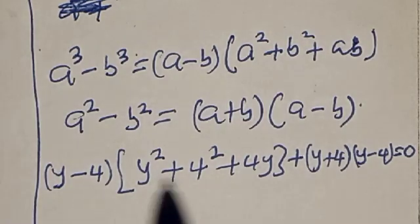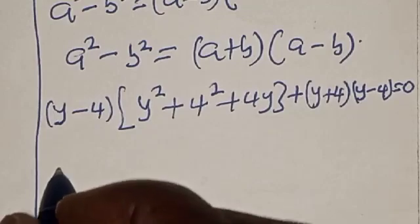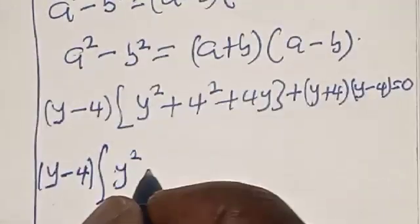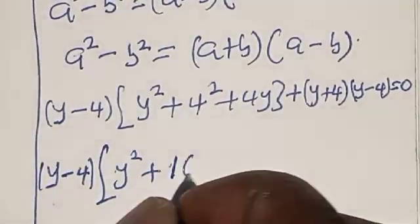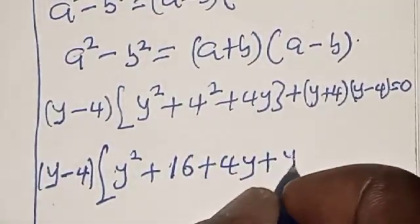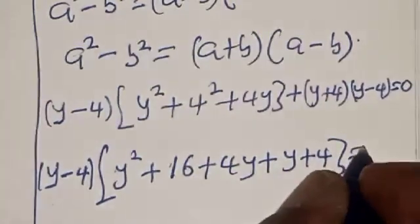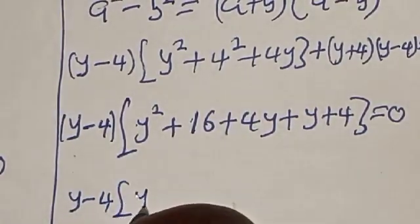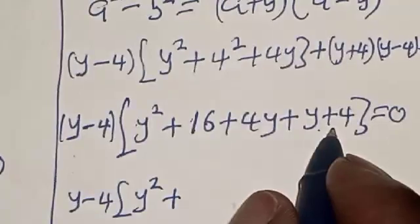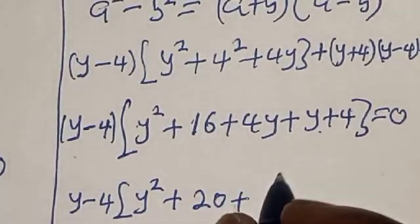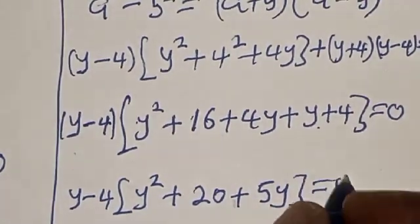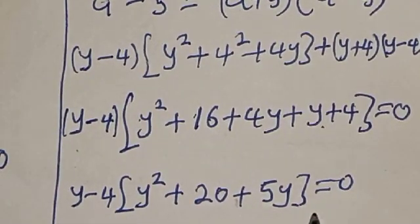We have (y minus 4)(y squared plus 16 plus 4y) plus (y plus 4)(y minus 4) equal to zero. Combining terms, we get (y minus 4)(y squared plus 5y plus 20) is equal to zero. Now we have two cases: y minus 4 equals 0, or y squared plus 5y plus 20 equals 0.